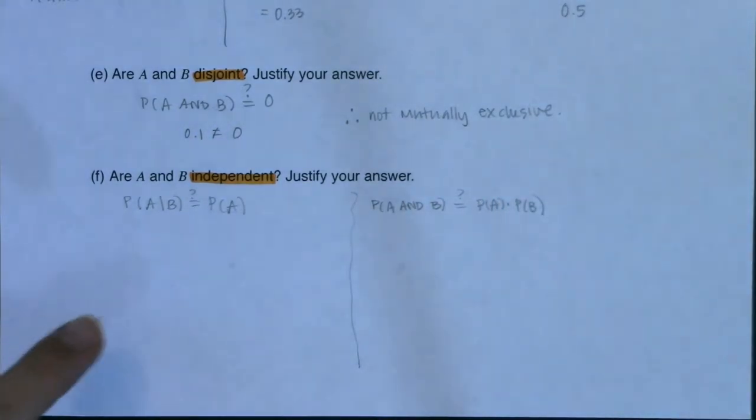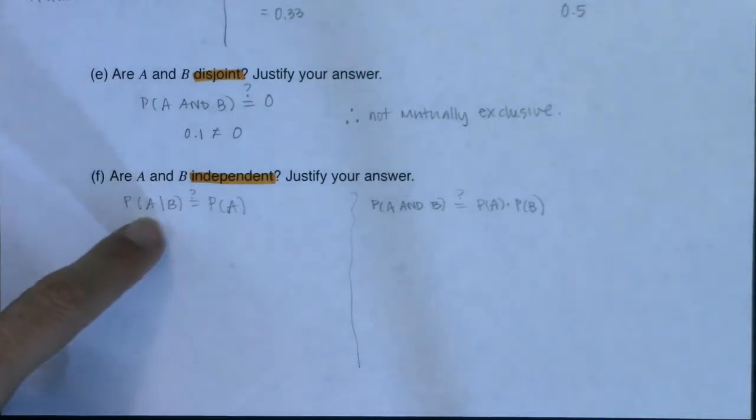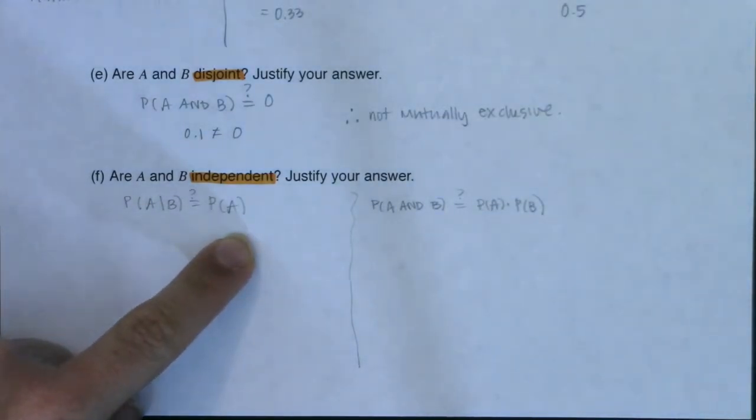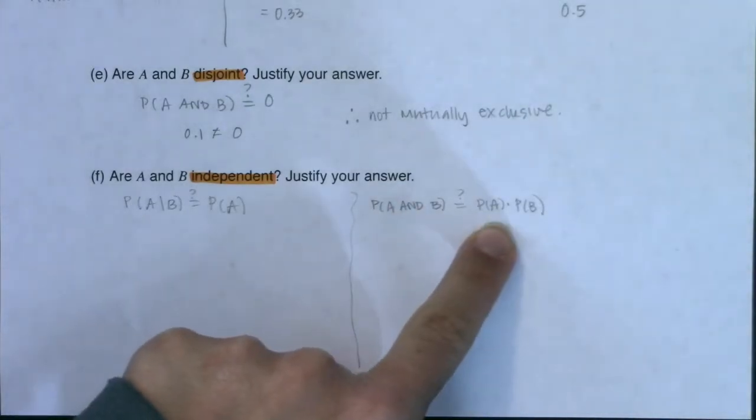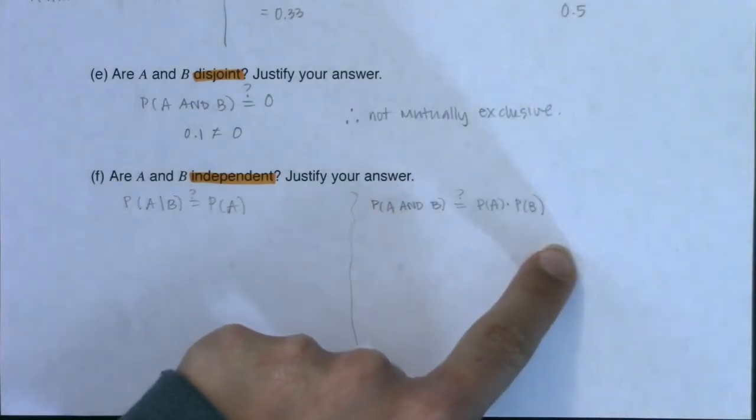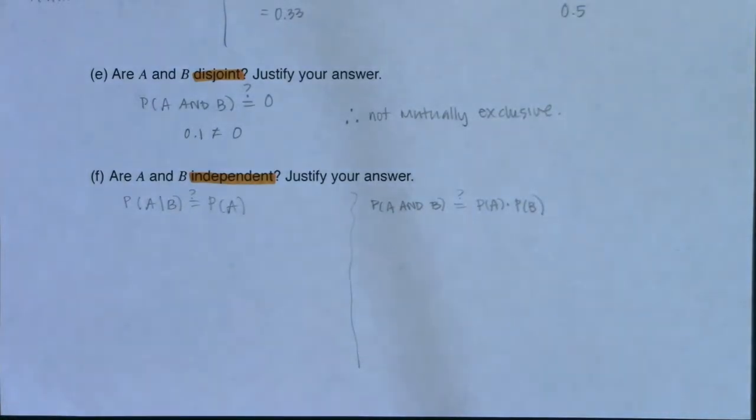The reason they're both going to work is because in part C, we calculated this number. And in part A, we calculated this number, right? For part C, we calculated this number. In part A, we calculated this number. And in part B, we calculated that number. So you've already crunched all the numbers you need for this. You just need to see if things equal each other or not.